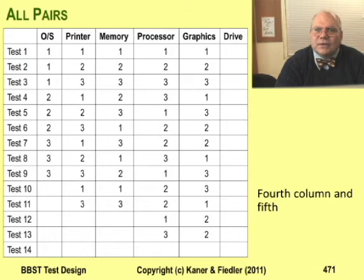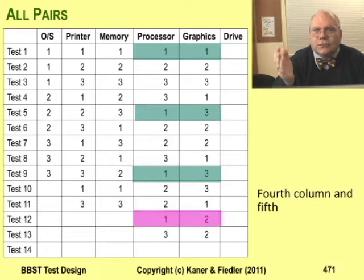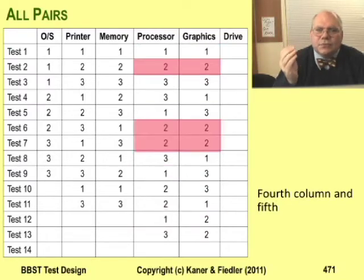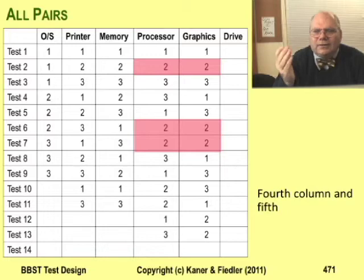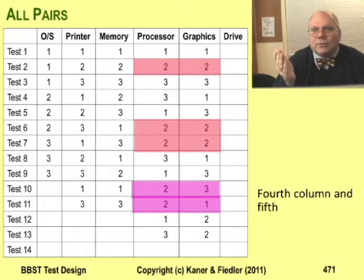Finally, check the processor against graphics. There's a one with a one, two ones with threes, but no one with a two — that becomes test 12. There's a two with a two, a two with a two, and a two with a two. I put a two into row 10 for a pairing of two with three, and a two into row 11 to pair two with one.